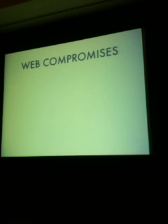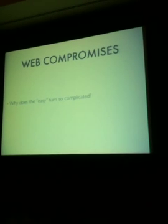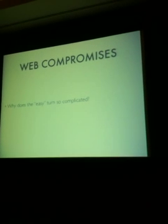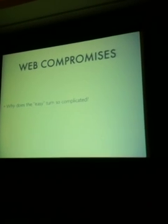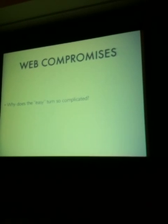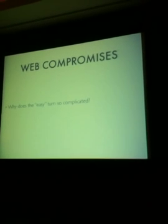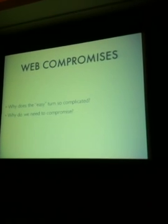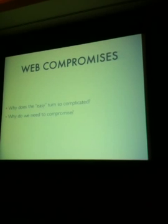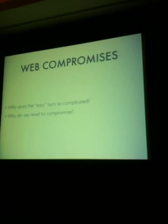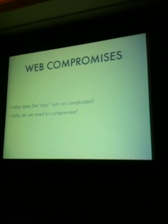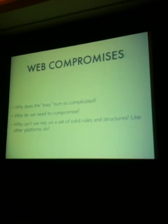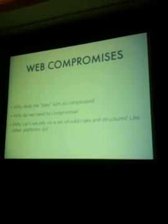That got me thinking — why does CSS turn so complicated sometimes? Why do all these modules we see in our everyday lives, with rounded corners and drop shadows and whatnot, why are they so hard to code? Why do we need to compromise? Why do we sometimes end up throwing in extra spans or extra divs just to make it look the way we want? Is that really accessible?